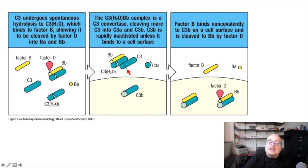Otherwise, the alternative pathway gets started in a slightly different way than the lectin and the classical pathways. Instead of using C1, C4, and C2, it uses factor B and factor D to complex with C3 in order to make a C3 convertase.